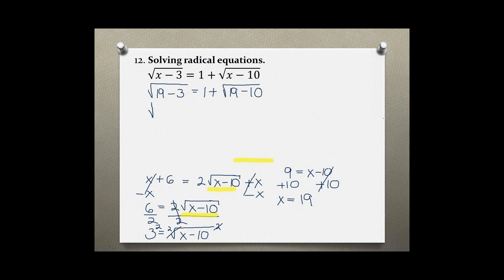19 - 3 gives us 16 = 1 + (19 - 10 is 9). √16 is 4, and 1 + √9 is 3, so 4 = 4, which is a true statement. Therefore, x = 19 is the correct answer for this problem.